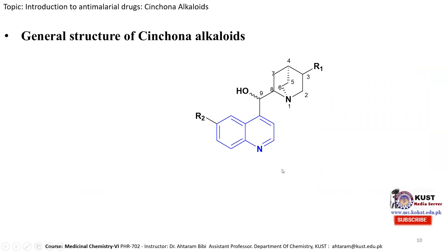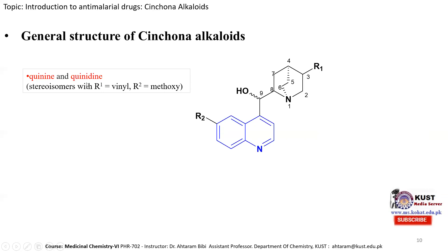The general structure of cinchona alkaloids is presented here. For quinine and quinidine, R1 is a vinyl group and R2 is a methoxy group. They have the same substituents but differ only at the stereogenic centers at positions 8 and 9, making them stereoisomers. In quinine, the C-8 center is S and C-9 is R; in quinidine, C-8 is R and C-9 is S.